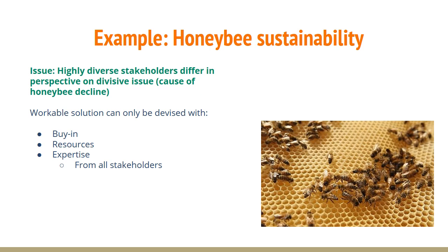Honeybee sustainability is a classic example of how a complex issue can often only be resolved by bringing together the right stakeholders. Beekeepers understand their bees but can't muster the scientific clout or funding alone to determine the cause of something as complex as colony decline. Pesticide manufacturers have tremendous financial resources and expertise, but they lack credibility with the public, beekeepers, and politicians because of their perceived vested interest in selling products. Beekeepers need to work with farmers to place their hives, and many crops need bees to pollinate them — everything in this issue is interrelated. Failure to align stakeholders over a long period has resulted in polarization, certainly in Ontario but also in other parts of the world.